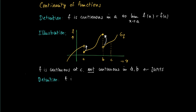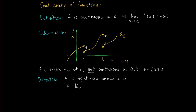What we do see is that f is right continuous at a. If we approach x from the right hand side to a, the function values move along to f(a). So f is called right continuous at a if the limit of x approaching a from the right of f(x) equals f(a). And f is called left continuous at a if the limit of x approaching a from the left equals f(a).